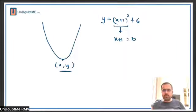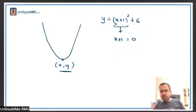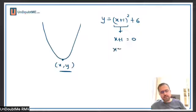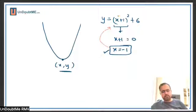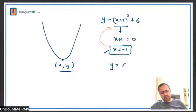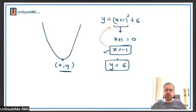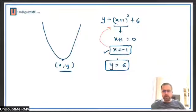The y vertex is important to find the minimum or maximum value. Whatever factor we get from completing the square, we equate it to zero and that gives an x value. When x equals minus 1 is reinserted, minus 1 plus 1 will be zero, so I get y equals 6. The y value of 6 is the vertex's y-coordinate.